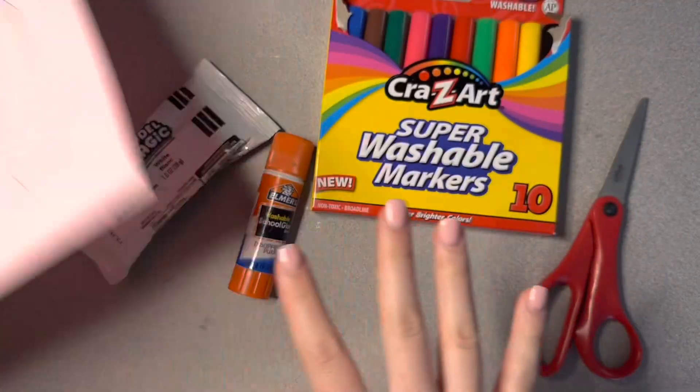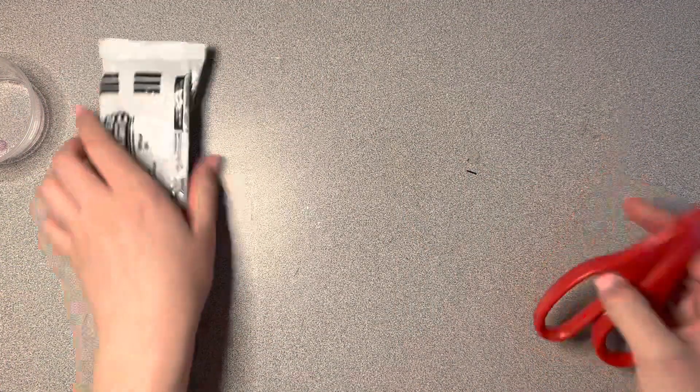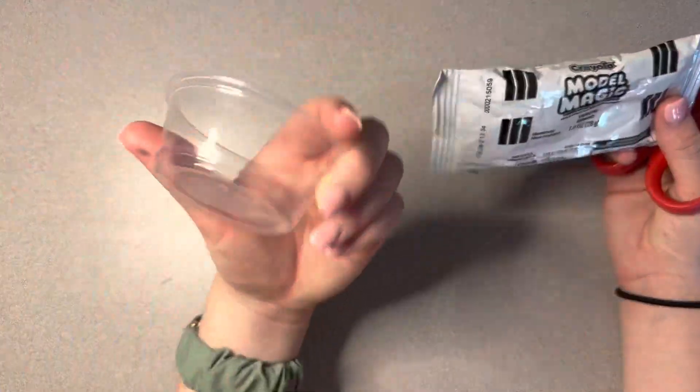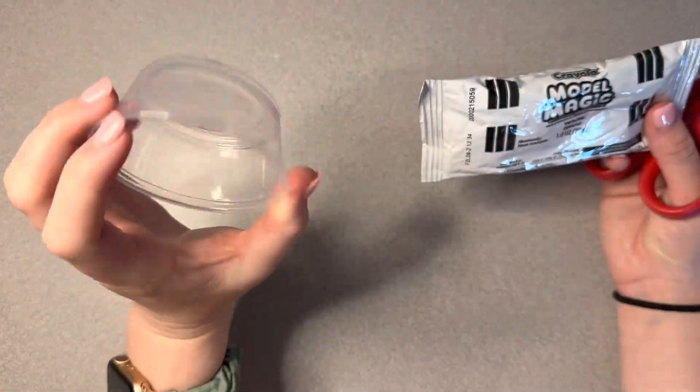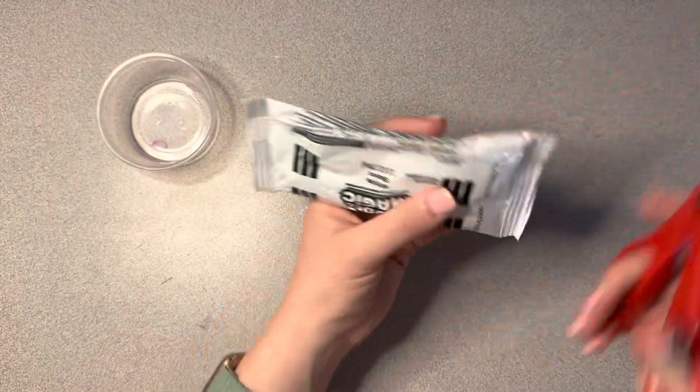That will be for later though, so I'm going to set that to the side. All you really need right now are your scissors, your model magic, and a cup. I think there's probably only enough for two per table, so you'll just have to share your cup. But you won't need it for long anyway.